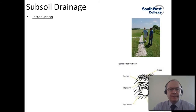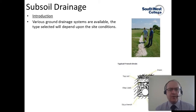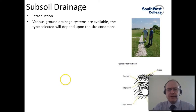We have already looked at the drainage and sanitary requirements to get the waste water out of the property. Now what we want to have a look at is the drainage requirements for external to the property and underground drainage. There are various ground drainage systems available and the type selected for any particular domestic property will really depend on the site conditions where the property is located.